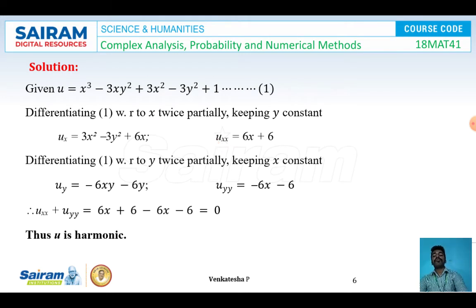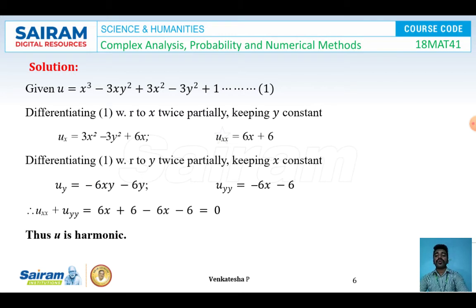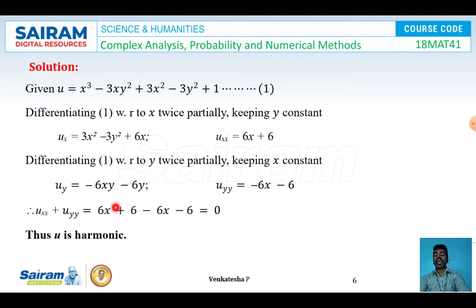Differentiating equation 1 with respect to y twice, treating x constant: u_y = −6xy − 6y, and u_yy = −6x − 6. Adding: u_xx + u_yy = (6x + 6) + (−6x − 6) = 0. Therefore ∂²u/∂x² + ∂²u/∂y² = 0, which implies u is harmonic.